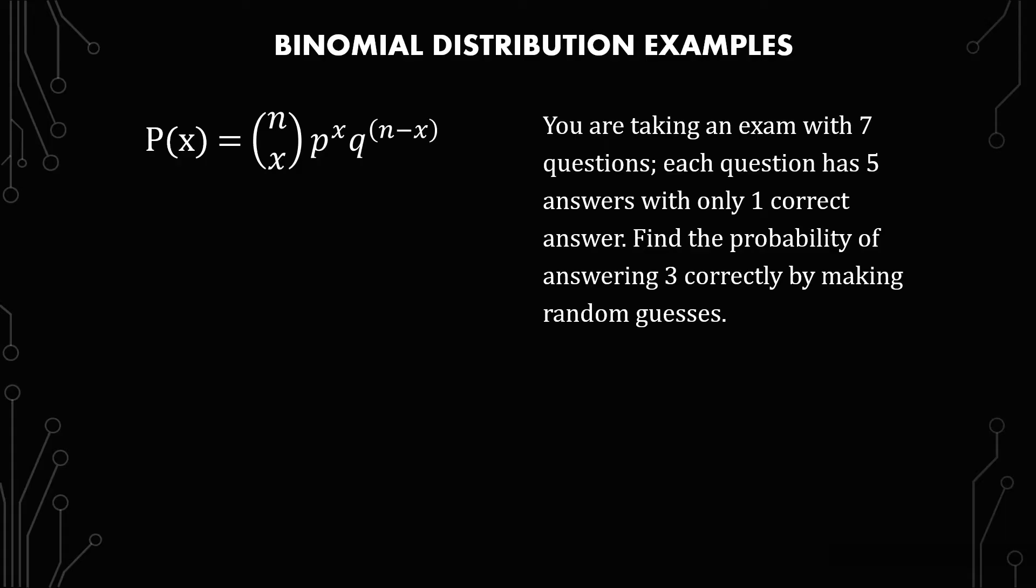So by the question, we know a lot of things. We actually know all the different letters in the formula. There are seven questions, so n equals seven. We want three correct answers, so x equals three. The probability of getting a success is 0.2 because out of five options for each question, there's only one correct answer. So one divided by five is 0.2. And then that means that q is 0.8. And so the probability is P(x = 3). That's how you would write that, and that's how you would see that if it was asked in a formal way on an exam.